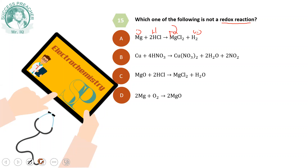Beta option: copper has an oxidation state of 0 on the reactant side, whereas Cu(NO3)2 means copper has an oxidation state of +2. In HNO3, nitrogen has an oxidation state of +5, whereas on the product side it is +4. So copper goes from 0 to +2, which means oxidation, and nitrogen goes from +5 to +4, which means reduction.